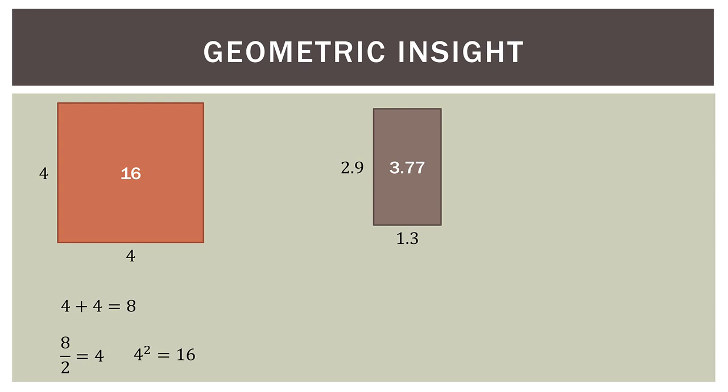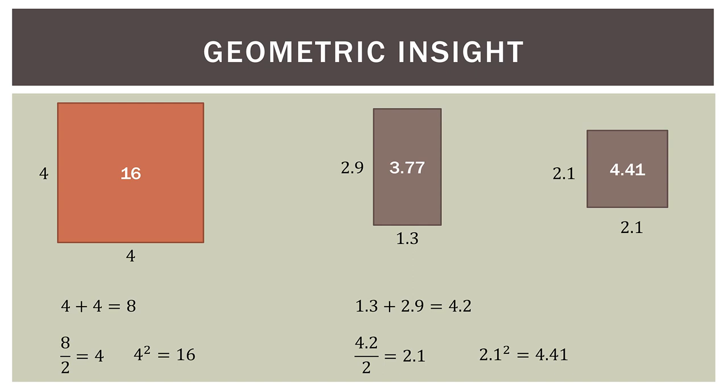However, what if we're not dealing with a perfect square? Let's say we have a rectangle where one side is 1.3 units and the other is 2.9 units, giving us an area of 3.77. If we take the average of those sides, we get 2.1. Now to find the area we square 2.1, and we get 4.41 — a perfect square of 4.41 when we use the average side lengths. However, that is not the same as the original rectangle's area of 3.77.